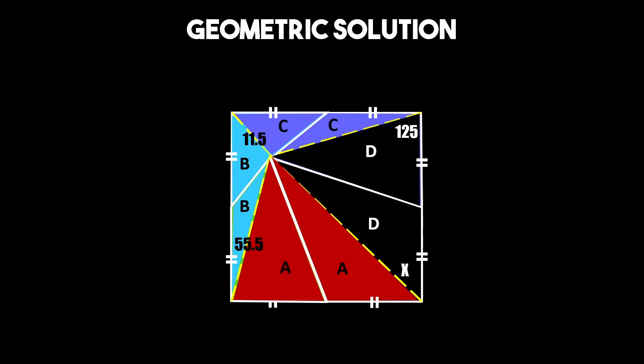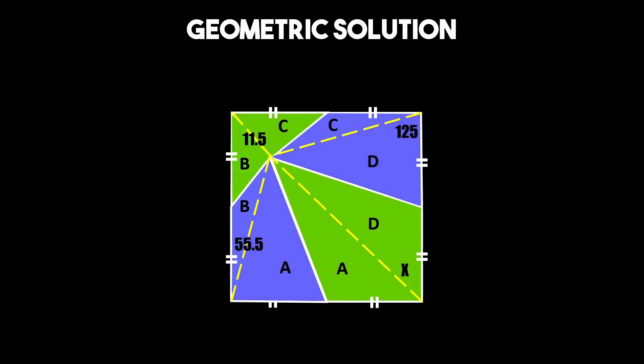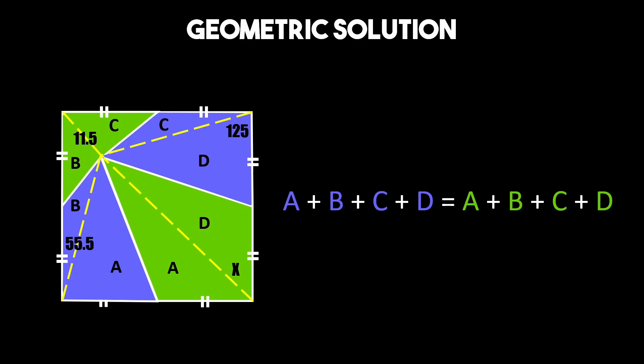For clarity let's label the different sets of triangles with the letters a through d. Now if you notice the triangles a, b, c, and d show up twice along the opposite diagonals of the square. Which is very useful because we can set up this equality that helps us find our missing area.